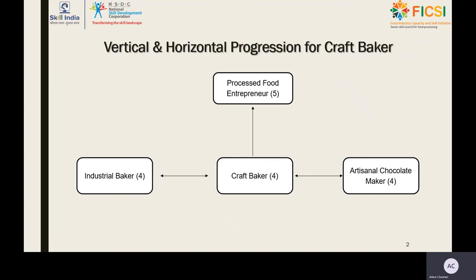Let us talk about vertical and horizontal progression for Craft Baker. A craft baker can obtain training for industrial baker as well as for artisanal chocolate maker at the same NSQF level as horizontal progression, and increase his or her scope in the bakery sub-sector by adding more product portfolio to the existing catalog or make himself eligible to work in all kinds of industrial as well as artisanal bakery units.